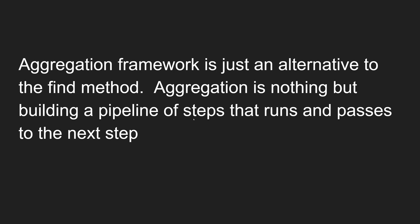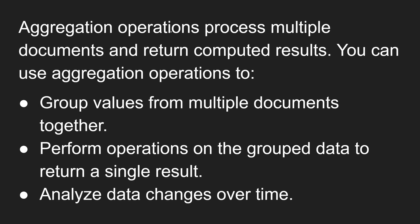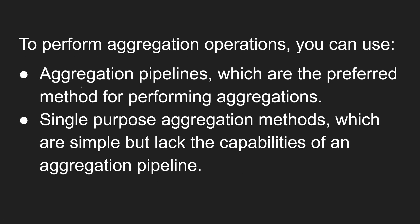Aggregation has a series of steps, called stages. The pipeline of steps works so that step one's output is carried as step two's input. Documents undergo execution through the series of steps and a resultant output is produced. Aggregation operations process multiple documents and return compiled results. You can use aggregation operations to group values from multiple documents together, group different types of documents, perform operations on grouped data, and analyze data changes over time.